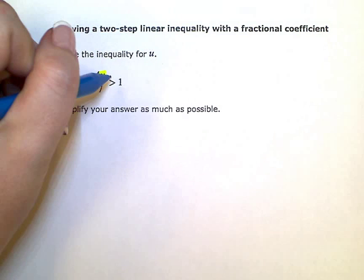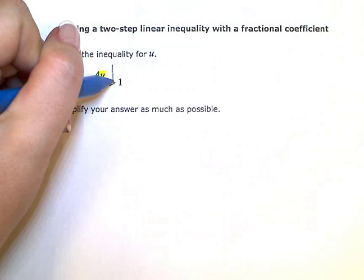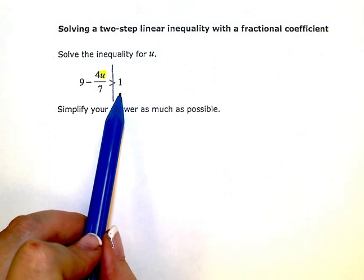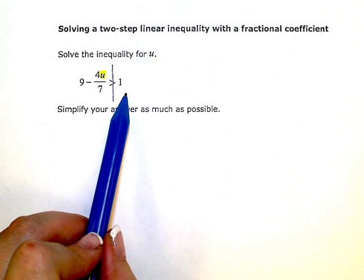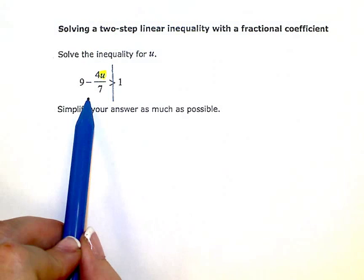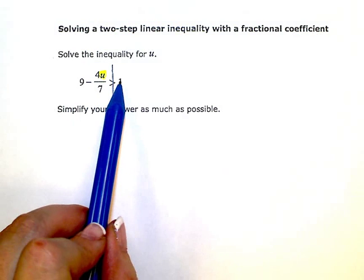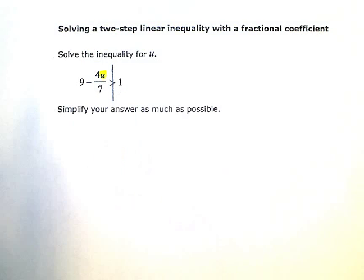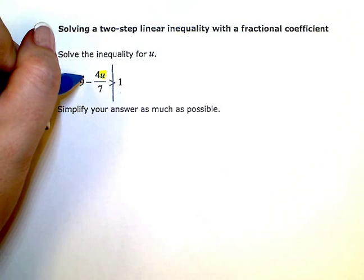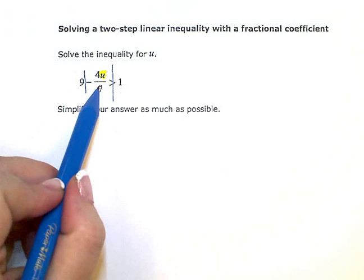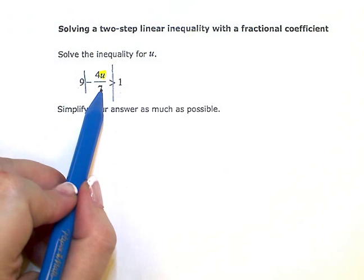If I draw a line down the middle of the inequality to separate my right and left sides, on the right side I just have one term, a constant term. But on the left side where my u is, I have two terms. Remember, terms are separated by plus and minus signs.